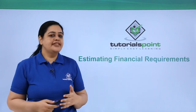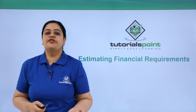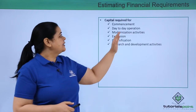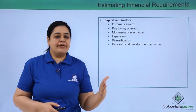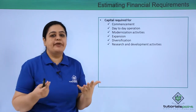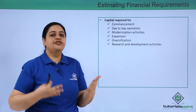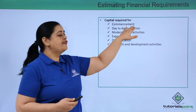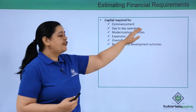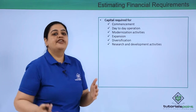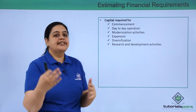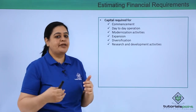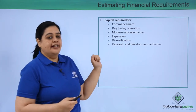Once I know what resources I need, I estimate the financial requirements of my business — how much finance I need. When it comes to capital, that is the money you need to invest to start or expand your business. Capital is required for commencement, that is starting a business, and for day-to-day operations. Working capital comes under this category — from the day you procure your raw materials till the time you sell to the final consumer and realize the money from them. That is your working capital cycle.